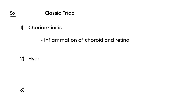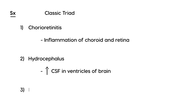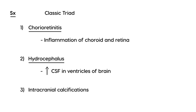The next part of the triad is hydrocephalus — an increased amount of cerebrospinal fluid in the ventricles of the brain. The final part is intracranial calcifications. Intracranial calcifications can occur in other conditions, but if they occur together with hydrocephalus and chorioretinitis, that's a strong indication of a toxoplasmosis infection.